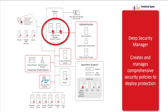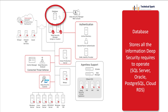Now let's understand the Trend Micro architecture. In this example architecture, two servers are configured in a cluster — in your environment you can use one server or make it a cluster. In a cluster, Trend Micro servers work as active-active, not active-passive, dividing the load between the two servers. The choice depends on your environment. Trend Micro supports SQL Server, Oracle, PostgreSQL, and cloud RDS databases, so whatever license you have, you can go with that database.